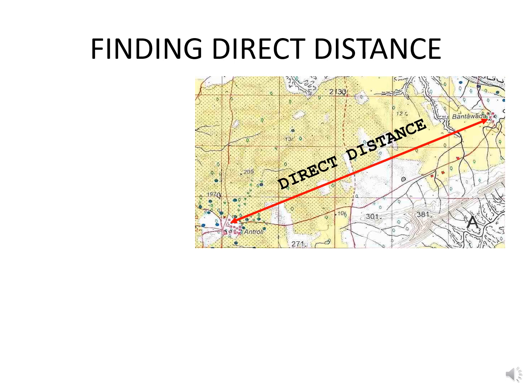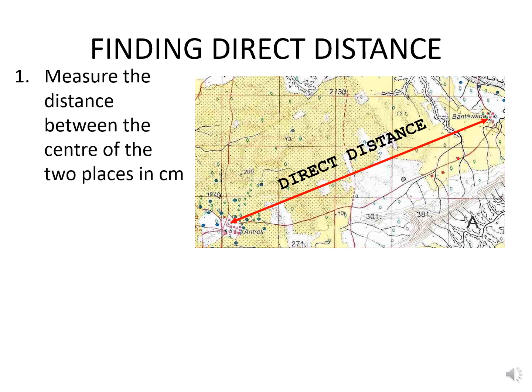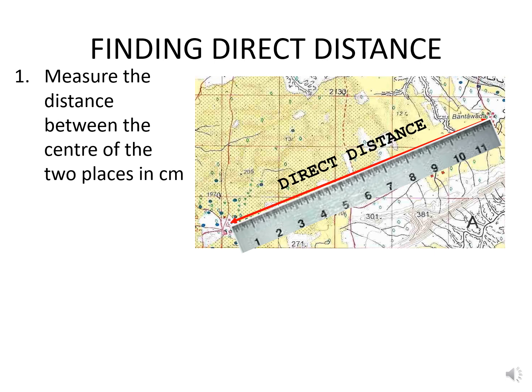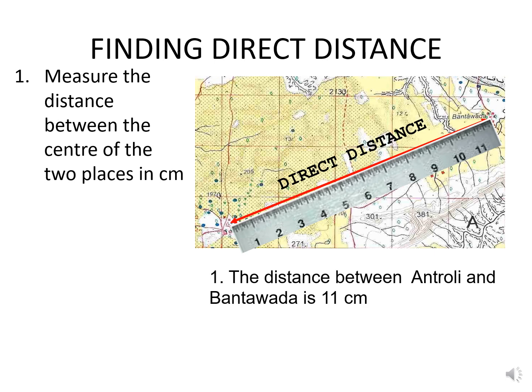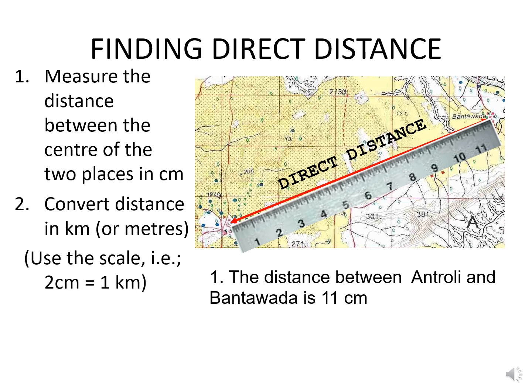Let's take an example of how to find direct distance, or distance as the crow flies. You will have to measure the distance between the centres of the two settlements on the map in centimetres using a ruler. Here, the distance between Antroli and Bantavada by ruler is around 11 centimetres. You then convert this distance using the scale: 2 centimetres equals 1 kilometre. So 11 divided by 2 gives 5.5 kilometres, or 5500 metres.